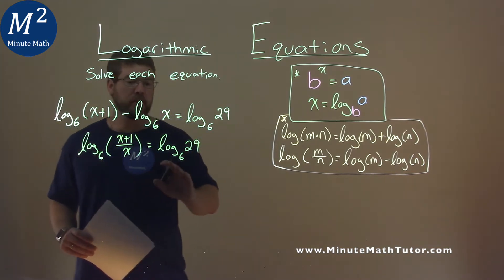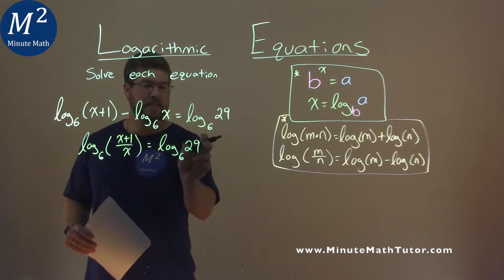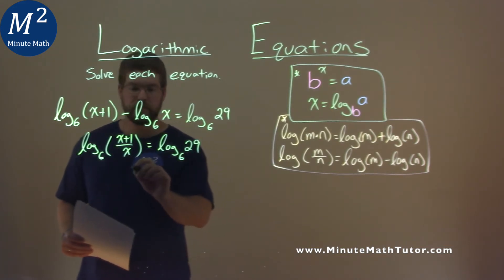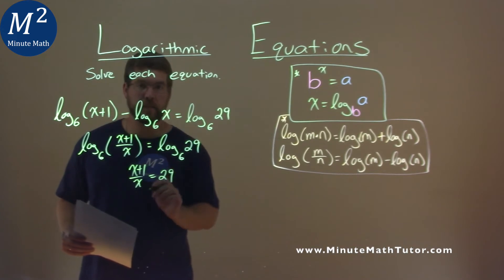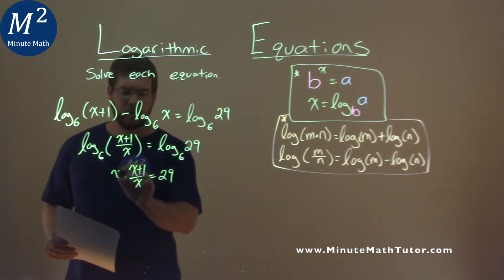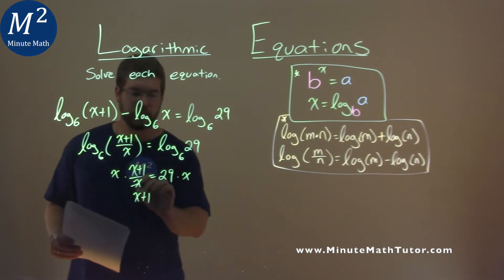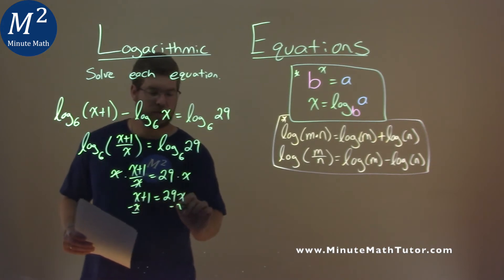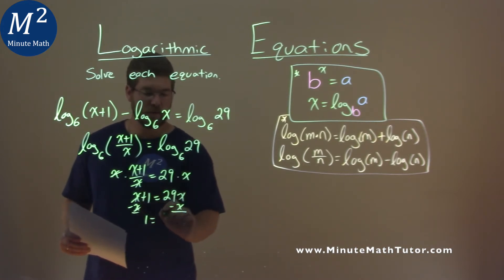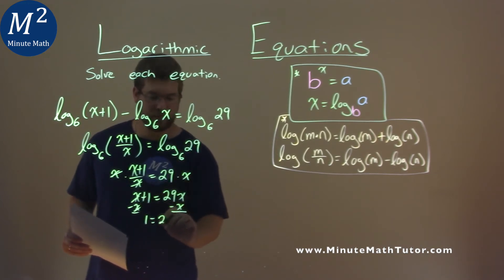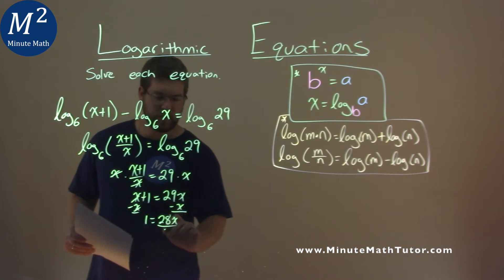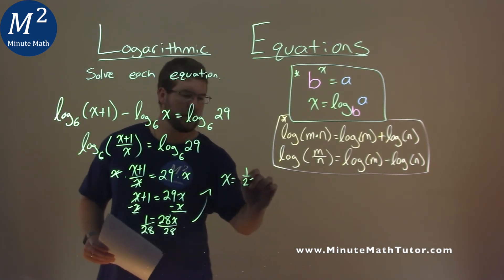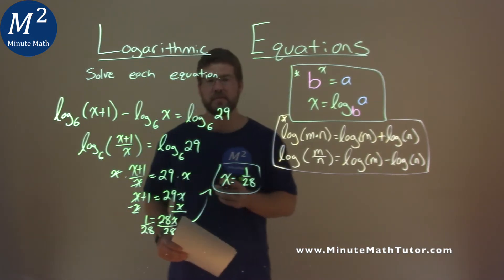Again, we have log base 6 and log base 6. When that happens, we can take what we're taking a log of, and since they're equal to each other with nothing else, we set them equal: x plus 1 over x equals 29. Now we just solve for x. Multiply both sides by x, so x plus 1 equals 29x. Subtract x from both sides, and 1 equals 29 minus 1, which is 28x. Divide both sides by 28, and x equals 1 over 28. That is our final answer.